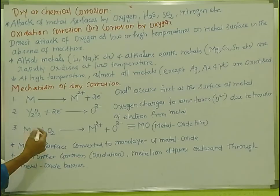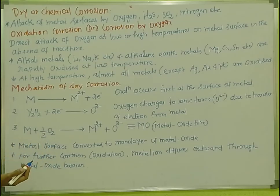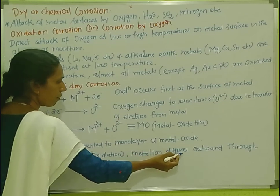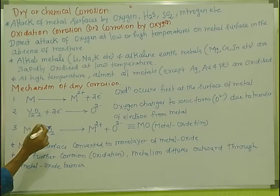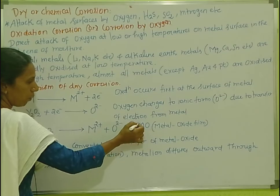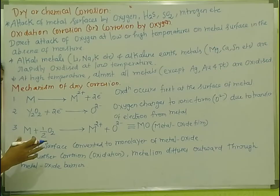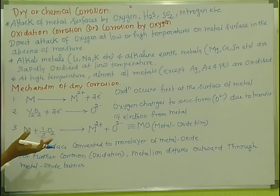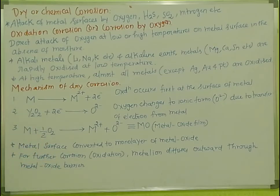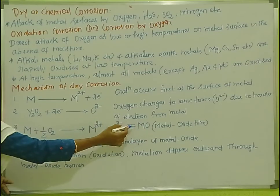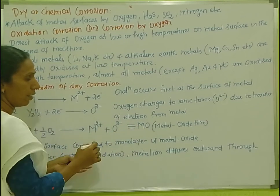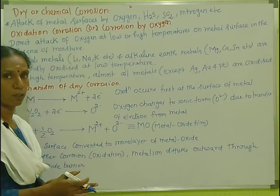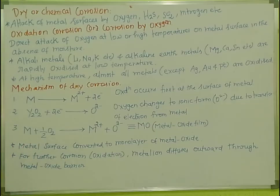Further corrosion — the oxidation continues — and we see that the metal ion diffuses outward through the metal oxide barrier. The metal oxide barrier acts as a layer. If you look at the metal oxide barrier, the metal ion diffuses outward. If the metal ion can escape through the barrier, further oxidation and corrosion occur. If diffusion is very low, further corrosion is limited.